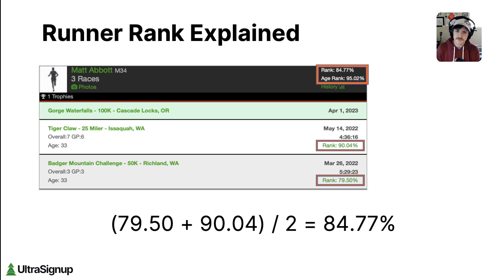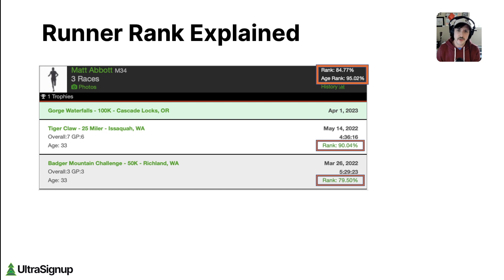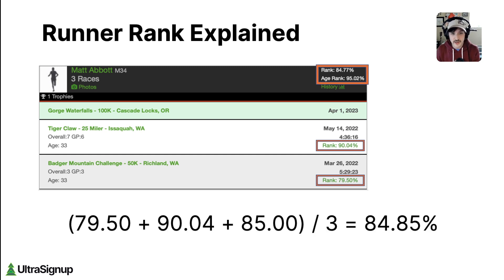Taking this one step further, you can estimate how your rank will change given a new race result. For example, if I finish my next race, Gorge Waterfalls 100k, with an 85% rank — which is ambitious — my overall rank would be calculated as 79.50 plus 90.04 plus 85 divided by three, or 84.85%. So if my rank is an 85, my overall rank will increase slightly.